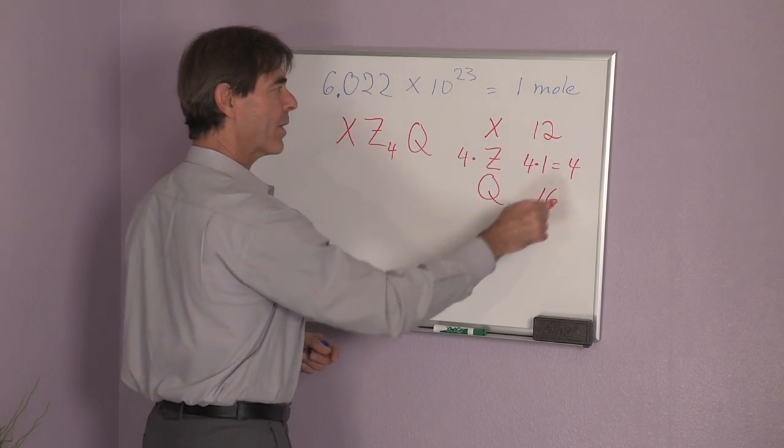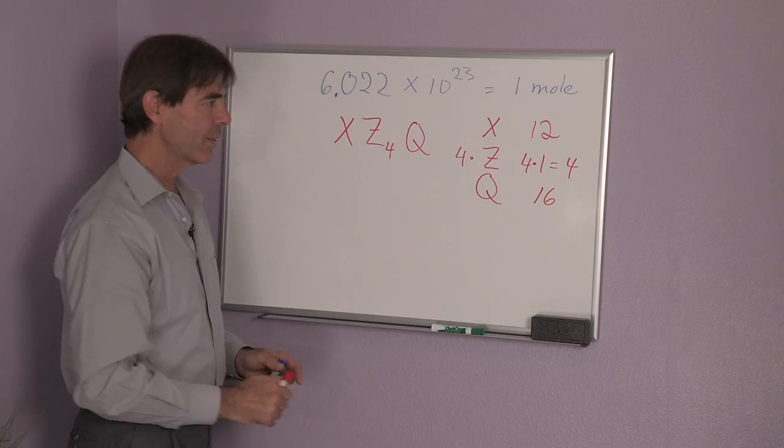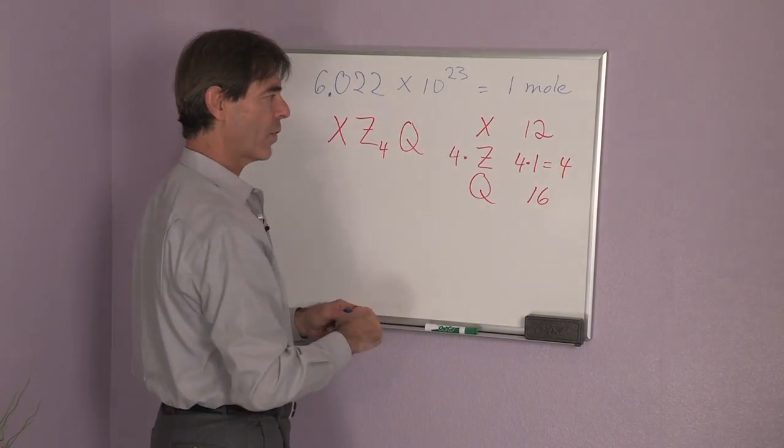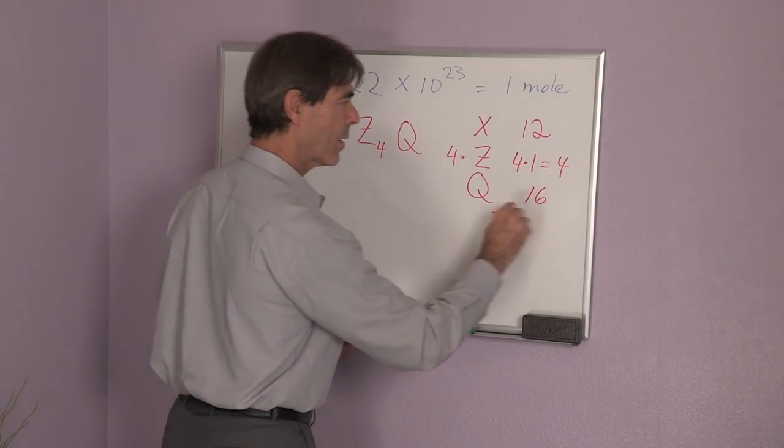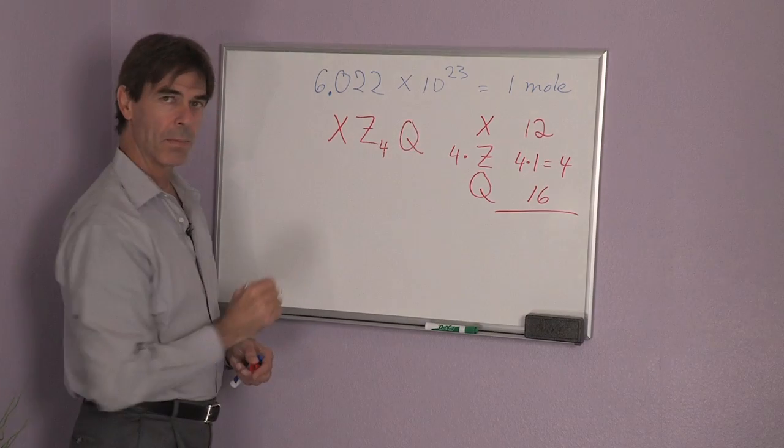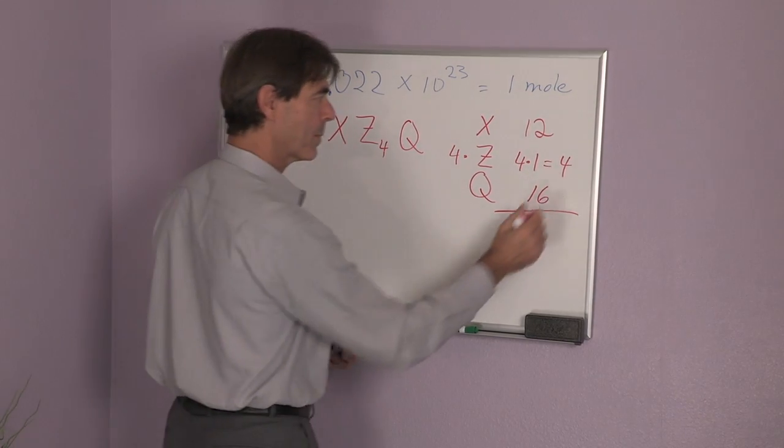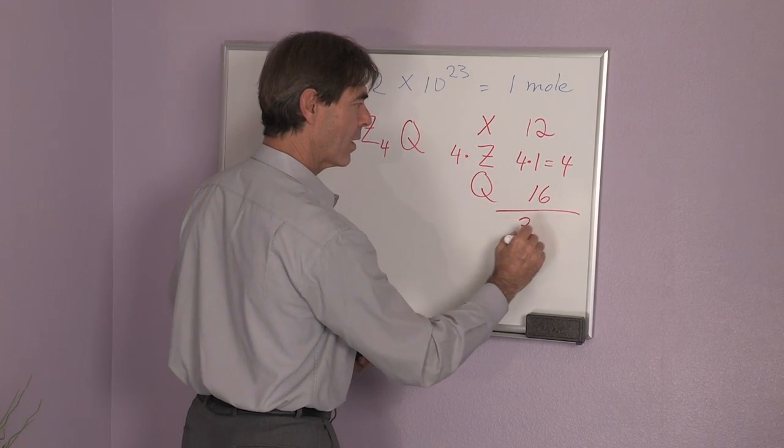To get the gram fractions, I would have to add up, first of all, how many grams do I have in a mole of this substance? And that is 32.